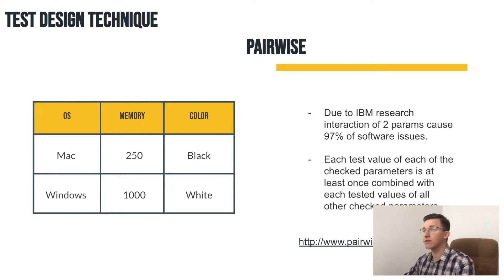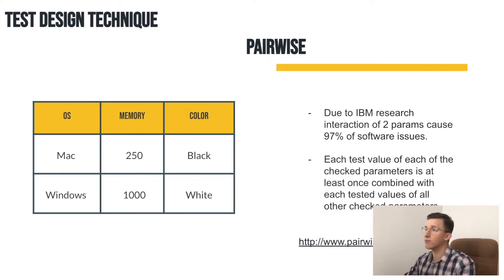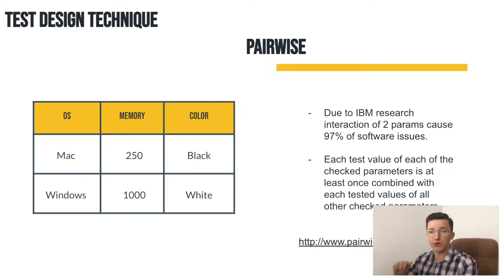Everything starts from the IBM research which found that 97% of software issues are caused by interaction of only two parameters. Failures in general are caused by not the complicated several parameter combinations — often the core of failures is inside only two parameters.